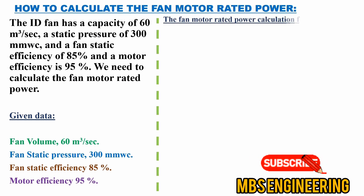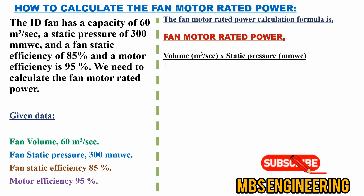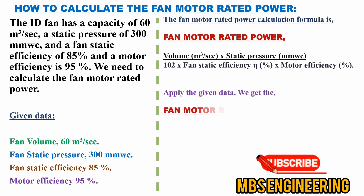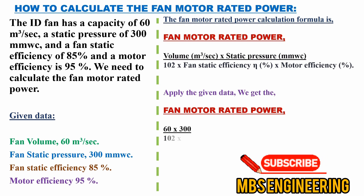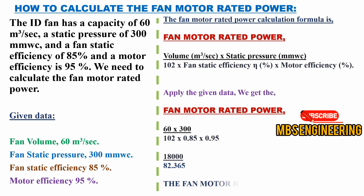The fan motor rated power calculation formula: fan motor rated power equals volume in meter cubes per second multiplied by static pressure in millimeters of water column, divided by 102, multiplied by fan static efficiency and motor efficiency. Applying the given data: 60 multiplied by 300, divided by 102 multiplied by 0.85 multiplied by 0.95. This gives 18000 divided by 82.365. Therefore, the fan motor rated power is 218.539 kilowatts.